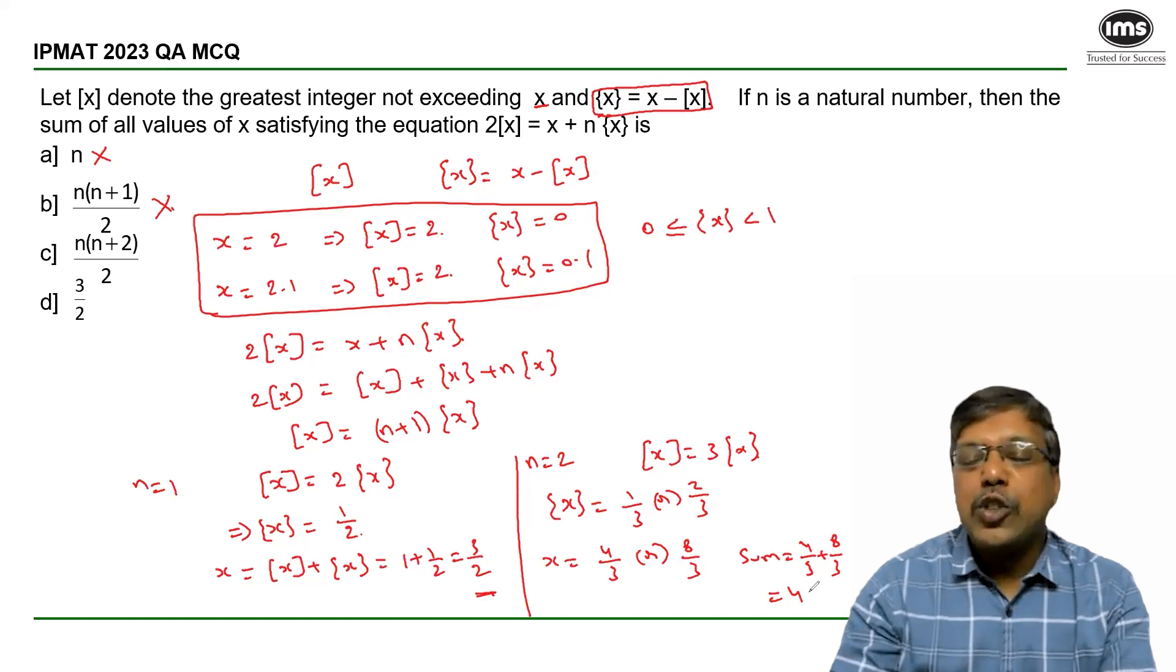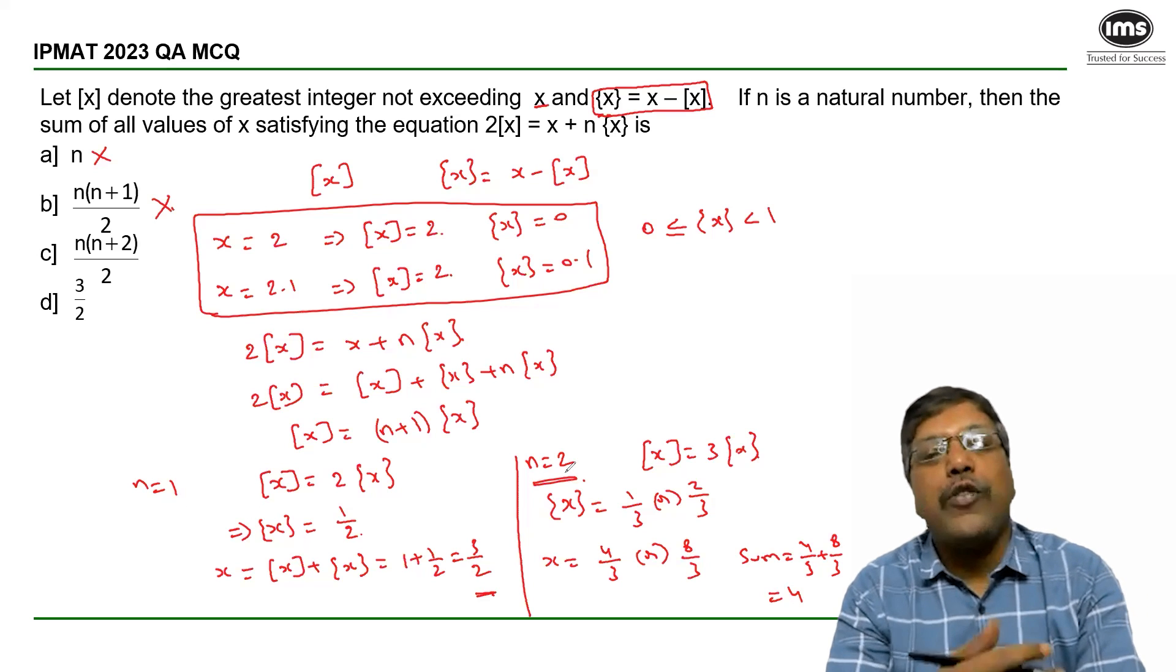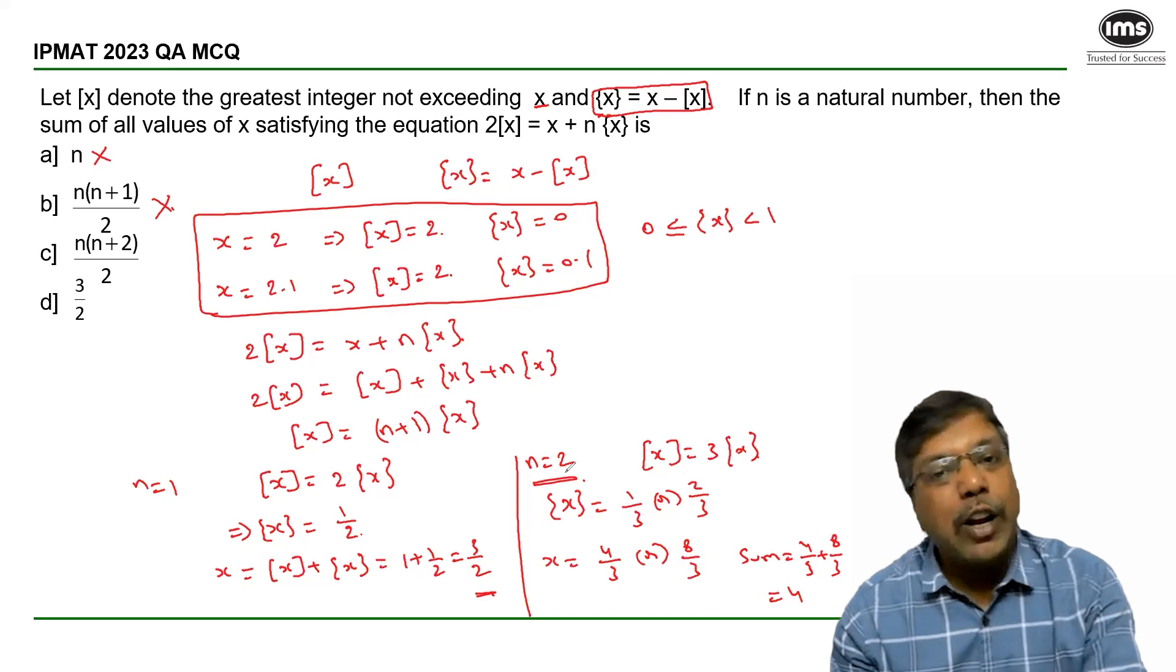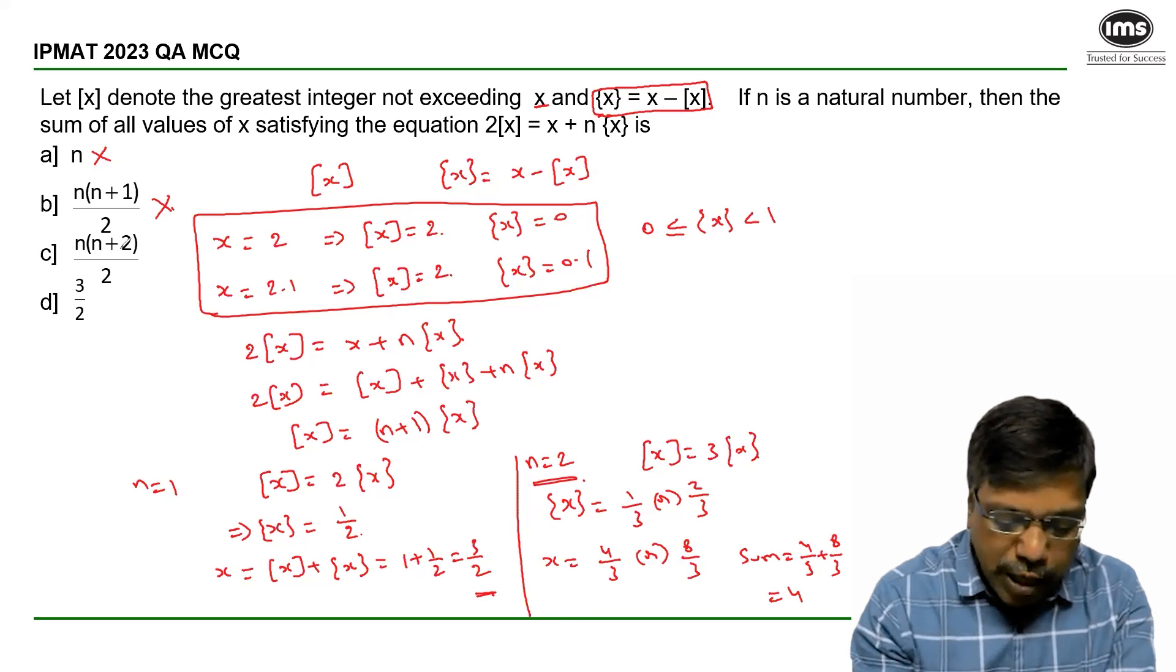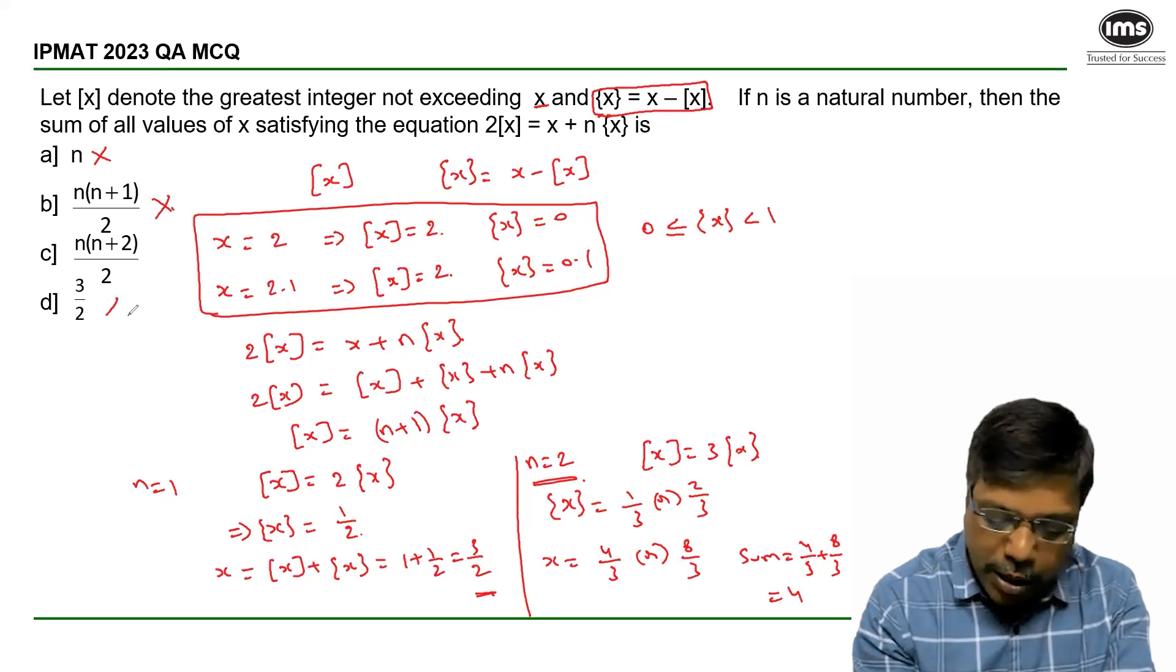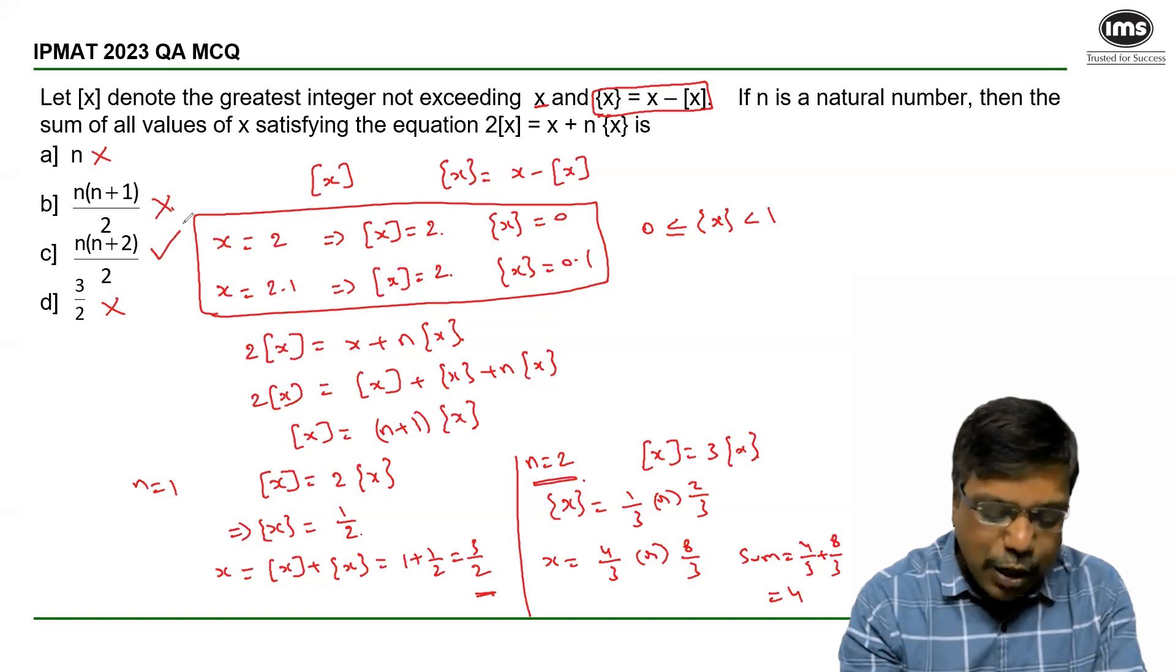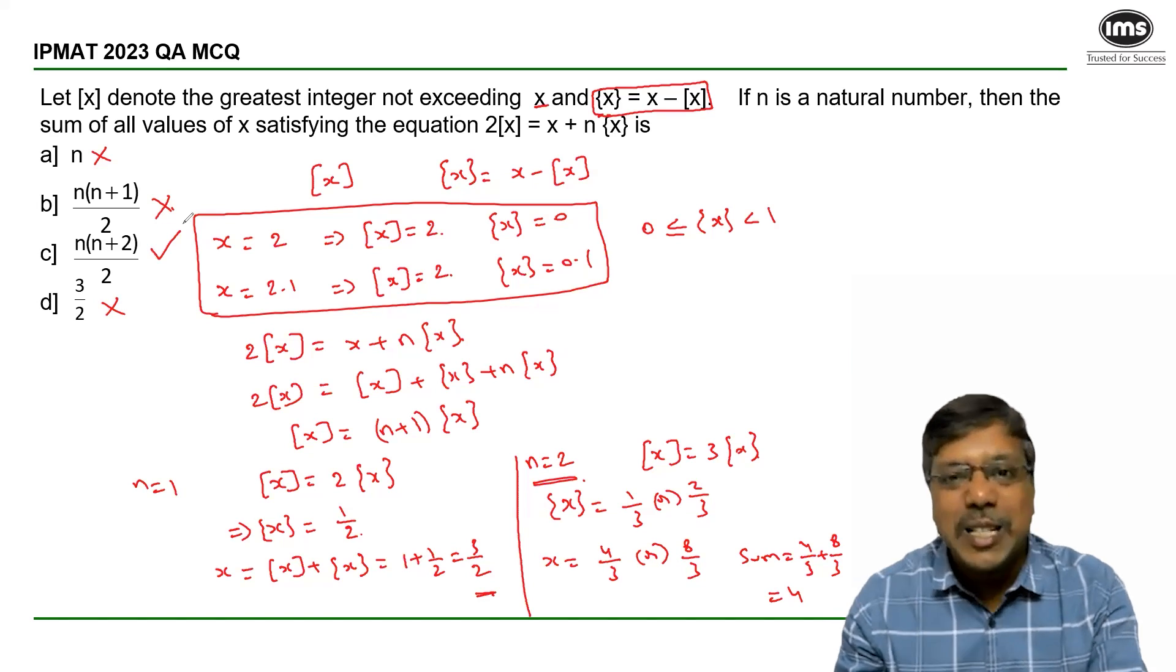If I substitute n = 2, let us see which of the remaining two options will give me 4. When I substitute n = 2, option C equals 4 but not option D. So by eliminating three choices, we can decide that answer C is the right answer.